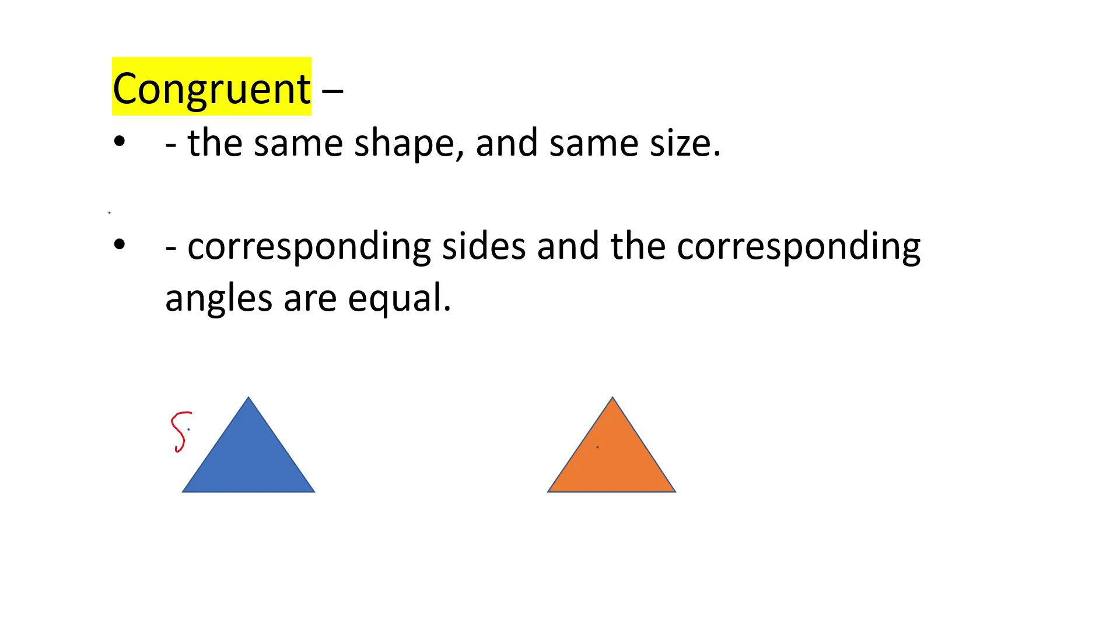This side would be eight, this side would be eight. This side would be ten, and this side would be ten. The bottom would be twelve, and this side would be twelve. So the corresponding sides and the corresponding angles are all equivalent.